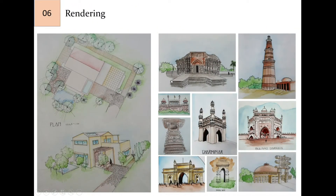The sixth part of my portfolio is rendering. This includes academic work and non-academic work. There is a plan and a two-point perspective view of a house based on that plan. On the right side are some renderings of famous structures of India.